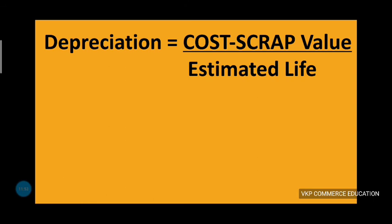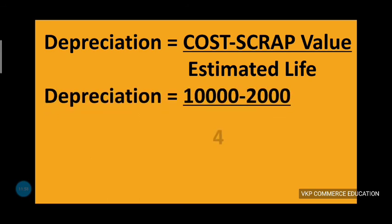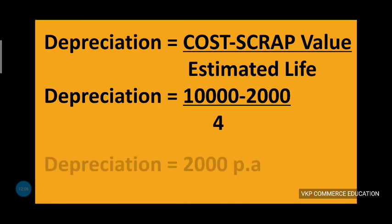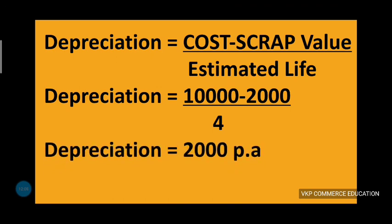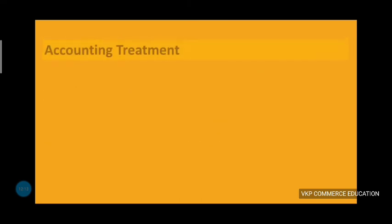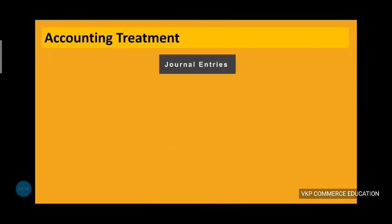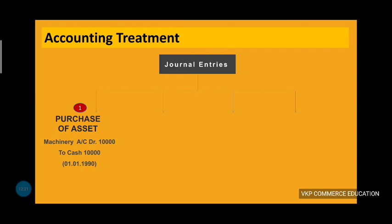Depreciation equals $10,000 minus scrap value of $2,000, divided by estimated life of 4 years. Therefore, depreciation equals $2,000 per annum. The first journal entry is the purchase of asset: Machinery Account debit, to Cash.